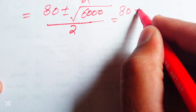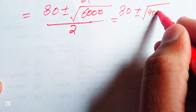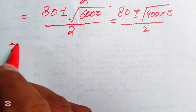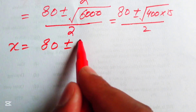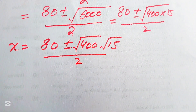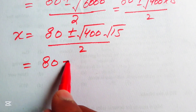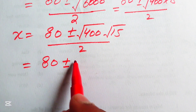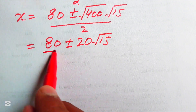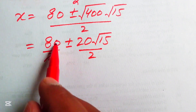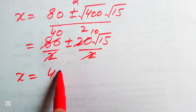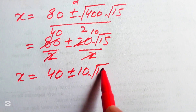We break 6000 as 400 multiplied by 15, divided by 2. We split the square root: square root of 400 times square root of 15, divided by 2. The square root of 400 equals 20, giving us 80 plus or minus 20 times the square root of 15, all divided by 2. Simplifying the fraction, we get the two values of x equal to 40 plus or minus 10 times the square root of 15.